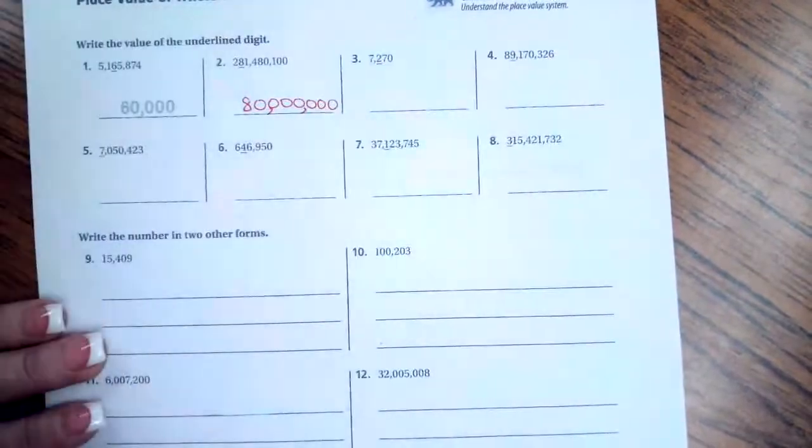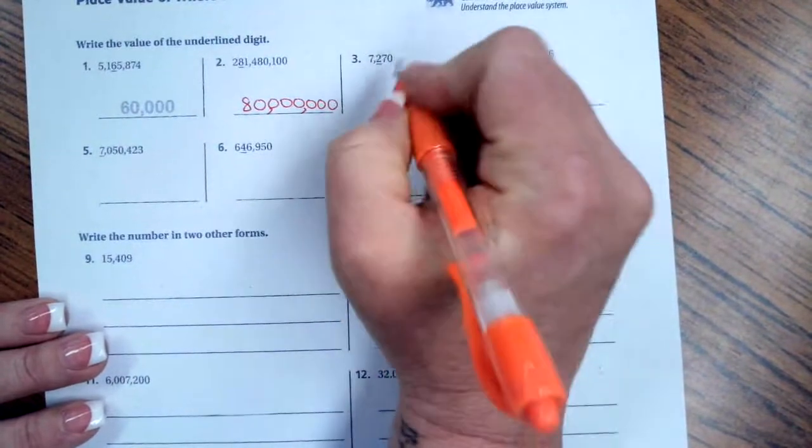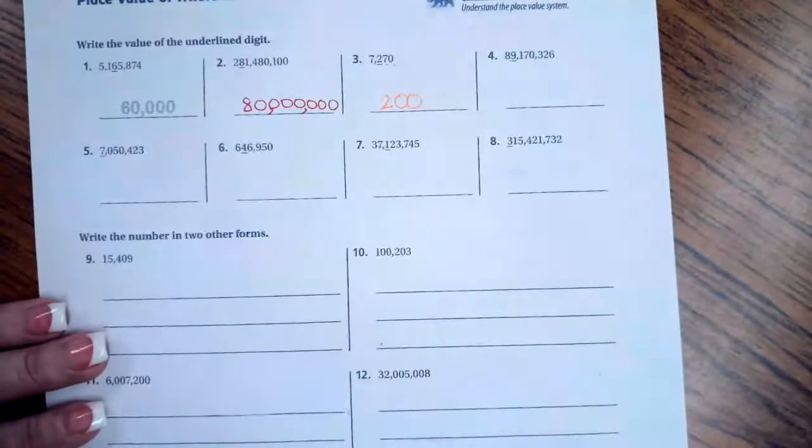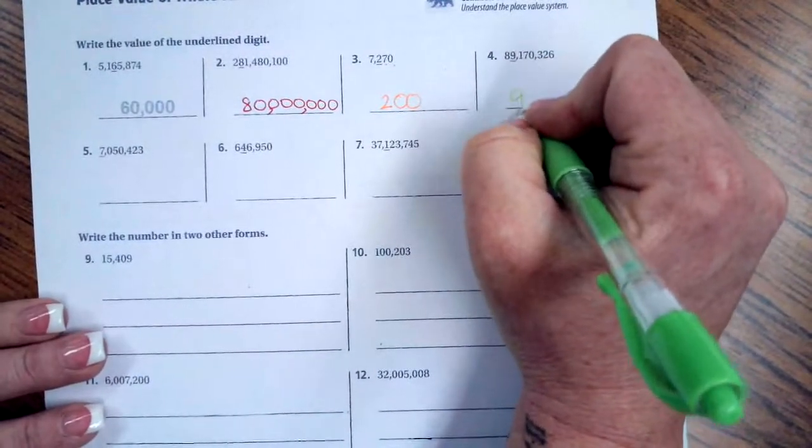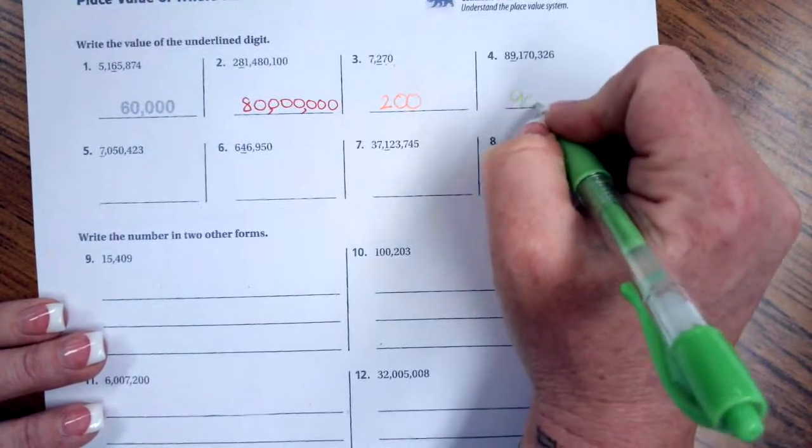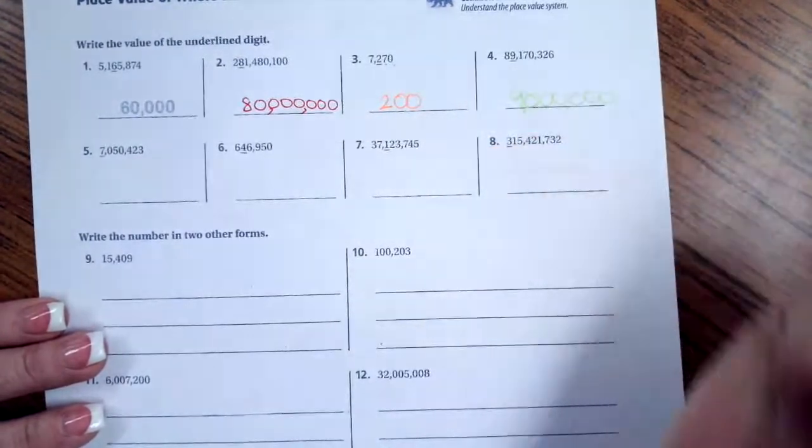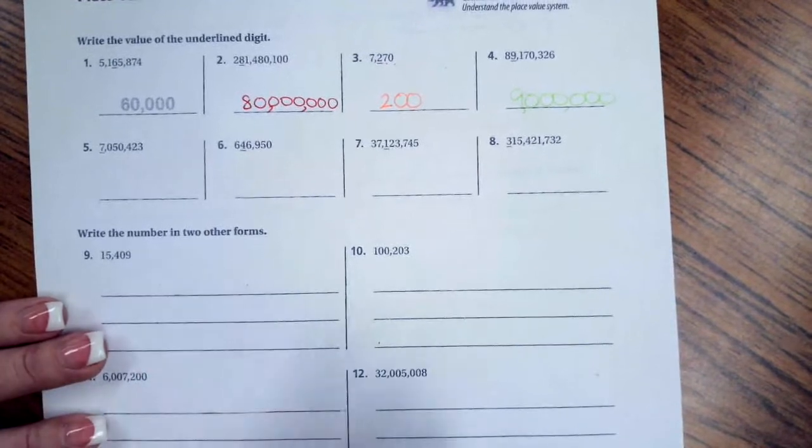Doing number 3, we're going to drop down that 2, and then there's 2 numbers after it, so I'm going to put 2 zeros. It really is that easy. Number 4, we're going to drop down the 9, and then there are 1, 2, 3, 4, 5, 6 numbers afterwards. 1, 2, 3, 4, 5, 6. Put your commas in. That really is that easy. Don't make it any harder than it's got to be.